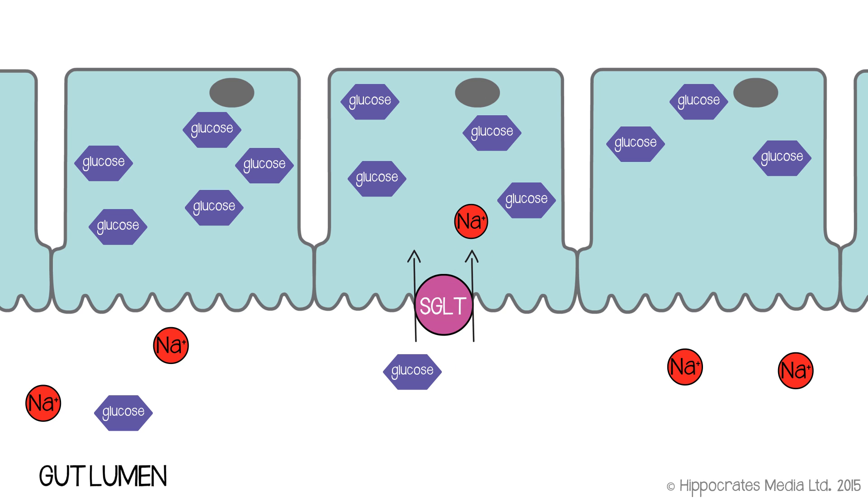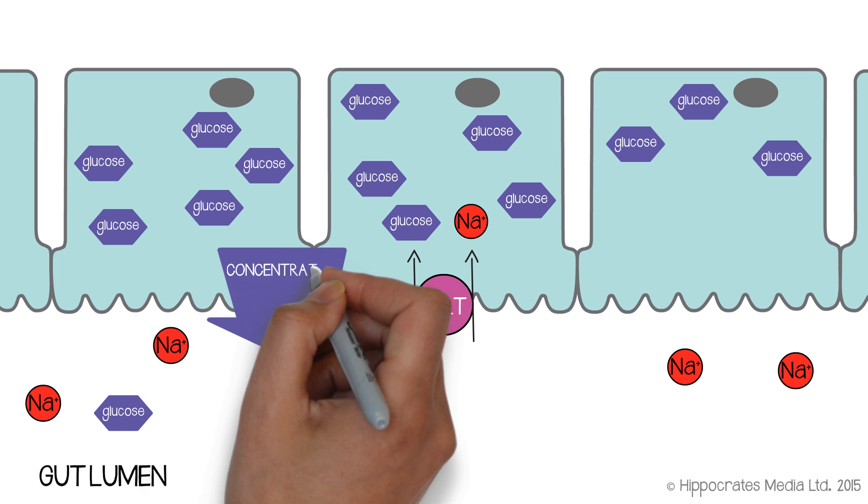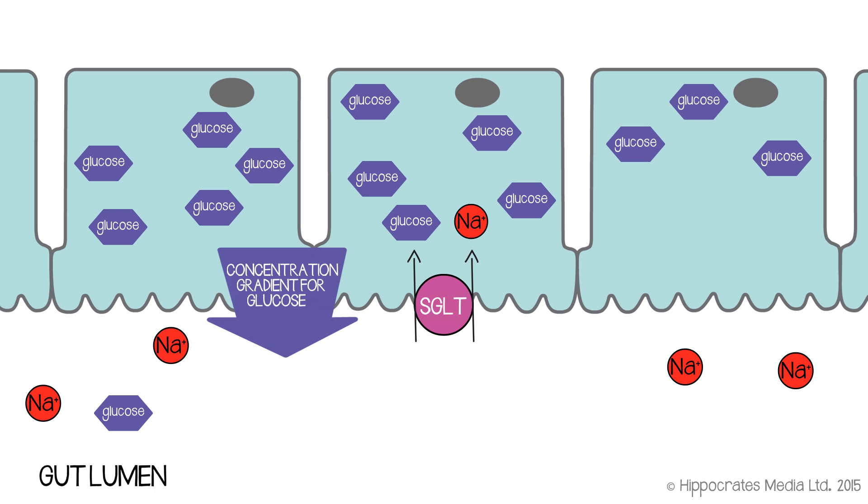Well, as the sodium enters the cell, it releases free energy. And the protein can rather cleverly harness the energy that's released to pull glucose into the cell as well. The point being that you would use such a transporter if glucose didn't want to enter the cell normally. So, in other words, if the concentration gradient for glucose was actually in the opposite direction, glucose, if anything, would want to leave the cell.